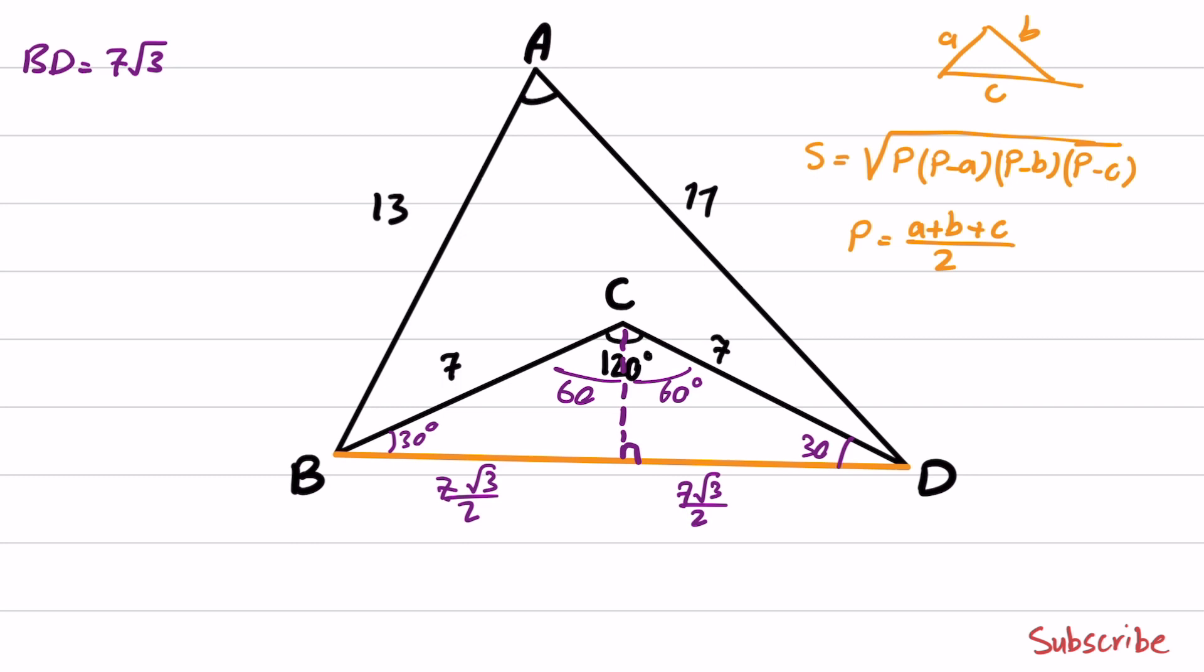we can obtain P will be 13 plus 11 plus 7 times square root of 3 divided by 2. And if you replace P into the equation we have here,